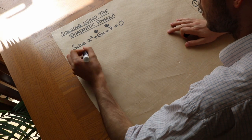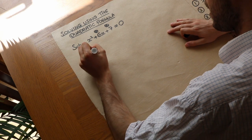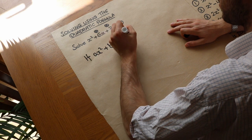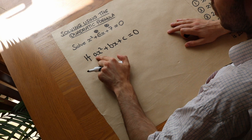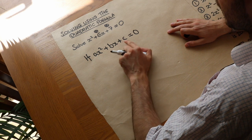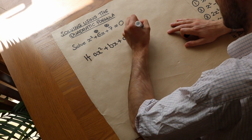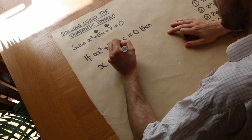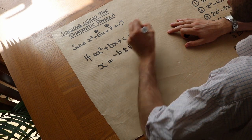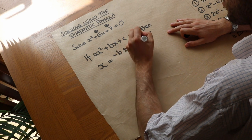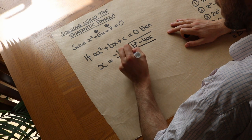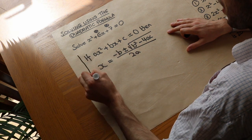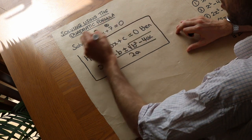So the quadratic formula is this. If ax squared plus bx plus c is equal to zero — so we've got a quadratic equation with some number for the x squared, some number for the x, and some other number — then the solutions are minus b, plus or minus the square root of b squared minus 4ac, over 2a. I'll explain what I mean by the plus or minus, but that is the quadratic formula.